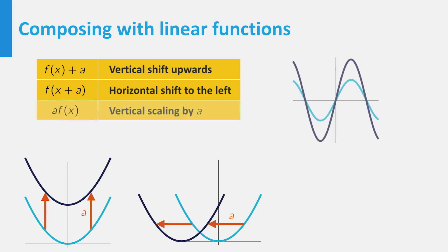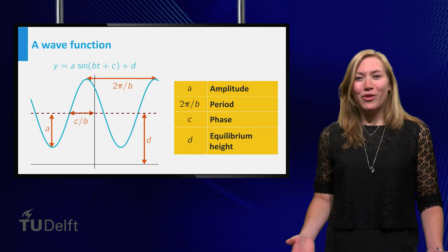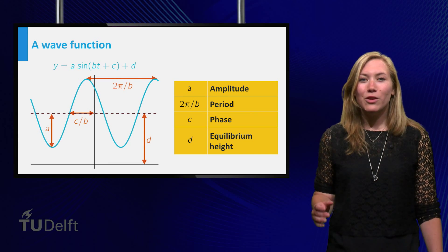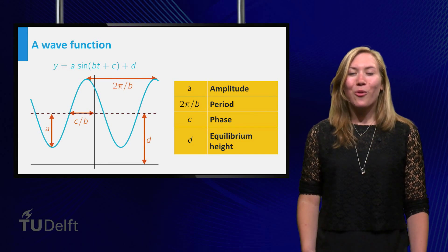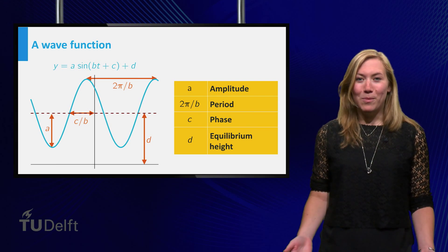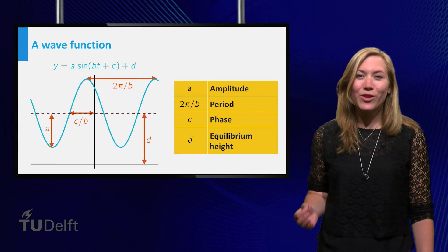a times f(x) stretches the graph a factor of a in the vertical direction, while f(ax) stretches a factor of 1 over a horizontally. The compositions of a sine function with linear functions typically describe waves. Four important aspects of a wave are its amplitude, the distance between the equilibrium position and extremal values.